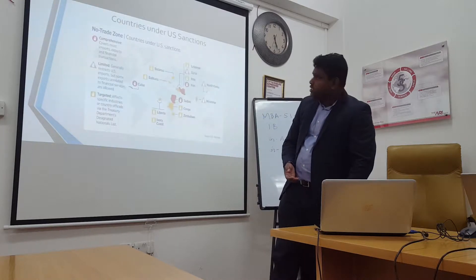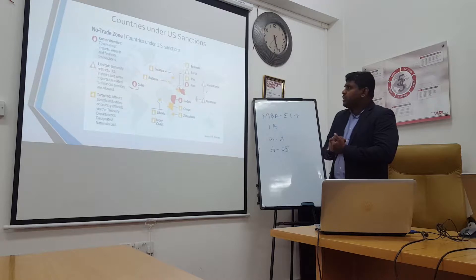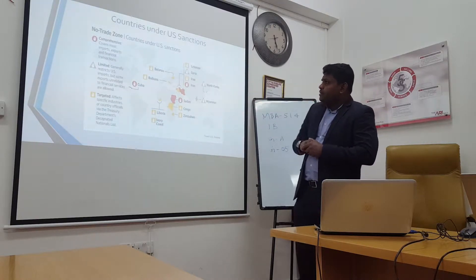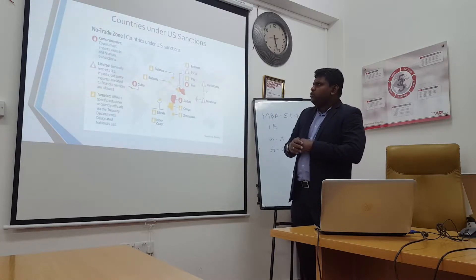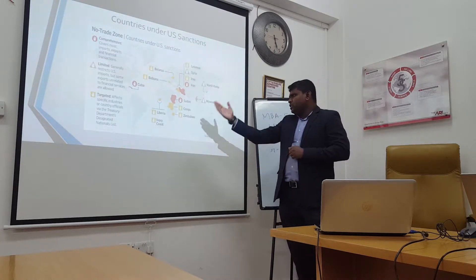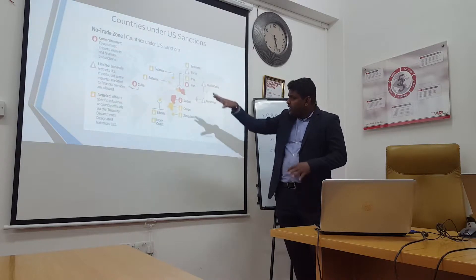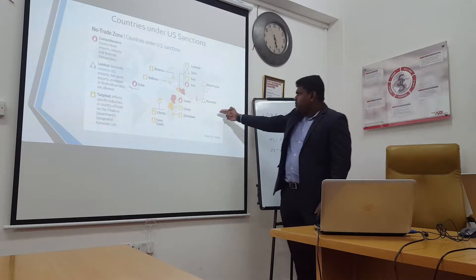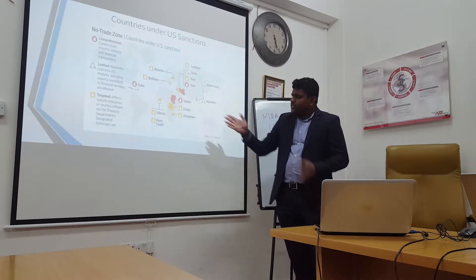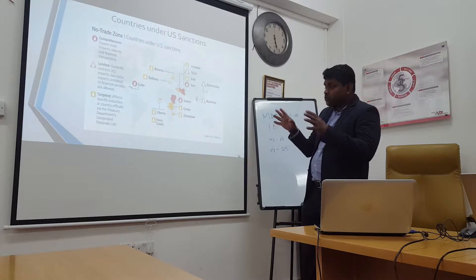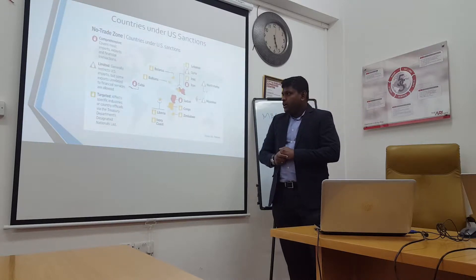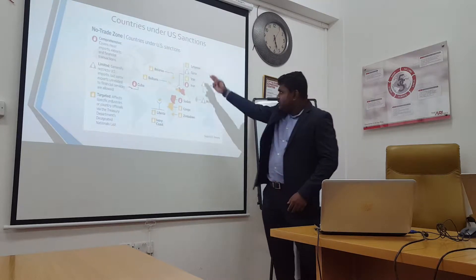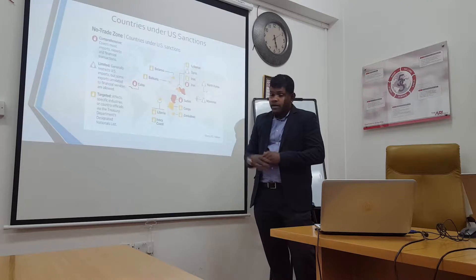This chart shows countries currently under U.S. sanctions. There are three categories: red indicates comprehensive sanctions, covering countries like Cuba, Sudan, and Iran. Pink indicates limited sanctioned countries, including Myanmar and North Korea. Targeted sanctions, highlighted in yellow, affect specific industries under the designated nationals list in the U.S., with various countries across the world falling under this targeted category.